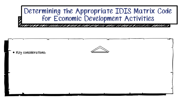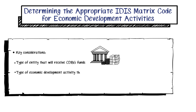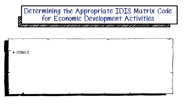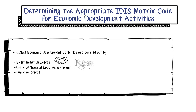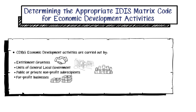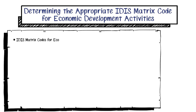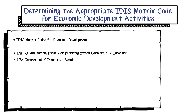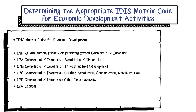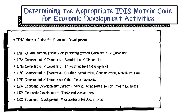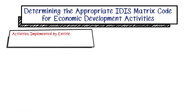IDIS Matrix Codes are used to categorize the funding of activities for reporting purposes. Selecting the correct matrix code for each activity helps ensure that activity accomplishments align properly with IDIS and helps management and Congress to see how funds are spent from one year to the next. To determine the correct IDIS Matrix Code for an Economic Development Activity, it is important to know the type of entity that will receive CDBG funds and the type of economic development activity that will be carried out. As discussed during the live training video, economic development activities are carried out by entitlement grantees, units of general local government, public or private non-profit sub-recipients, and for-profit businesses. When these IDIS Matrix Codes are grouped by the type of entity that will be using CDBG funds to carry out the activity, the task of determining the appropriate IDIS Matrix Code becomes more clear.